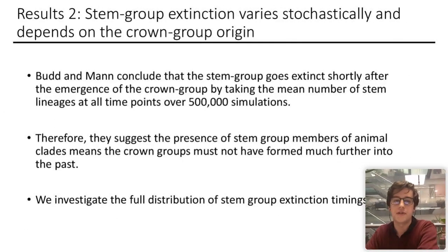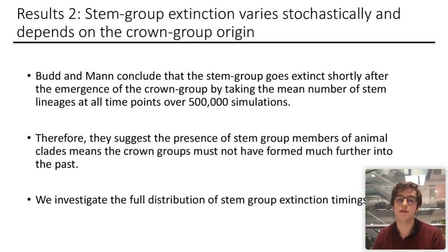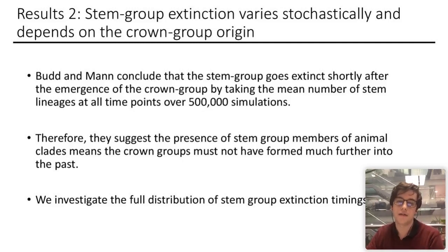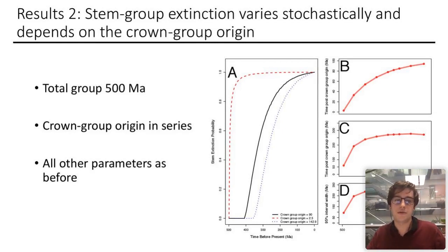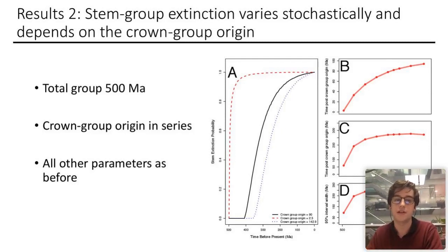Secondly, we look at the extinction of stem groups after crown groups form. The previous paper concludes that stem groups go extinct shortly after the emergence of the crown group, by taking the mean number of stem lineages at time points between 500 and 0. We do things slightly differently, taking all simulations individually and looking at when the stem group goes extinct in each of them. We keep parameter values the same as before, but instead of estimating the crown group age, we have it in a series between our upper and lower 95% intervals.